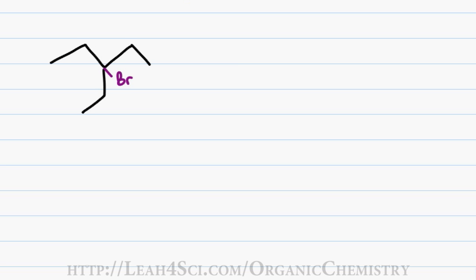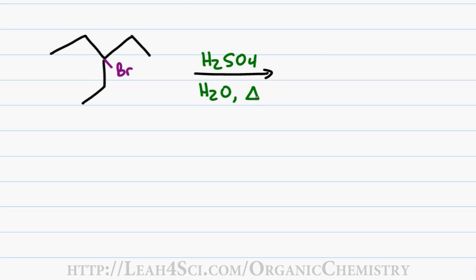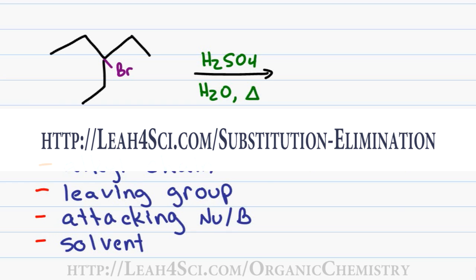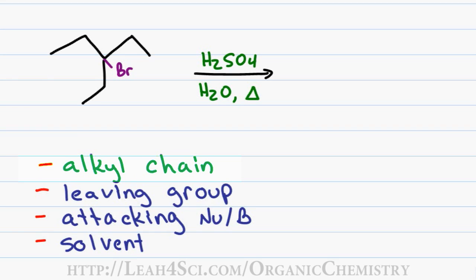Let's look at the mechanism for the E1 reaction by analyzing what happens when 2-bromo-2-ethylpentane reacts with H2SO4 in water and heat, using a four-part checklist for substitution and elimination reactions. We begin with the alkyl chain, looking at the alpha and beta carbons. The alpha carbon holding the leaving group is a tertiary carbon, which means a stable carbocation can form, so a one-type reaction — SN1 or E1 — can take place.